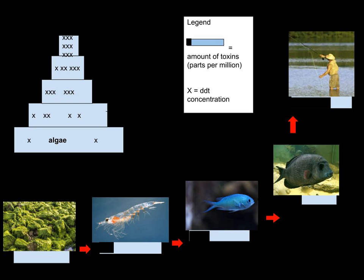The substances become increasingly concentrated in tissues or internal organs as they move up the chain. Bioaccumulants are substances that increase in concentration in living organisms as they take in contaminated air, water, or food, because the substances are very slowly metabolized or excreted.